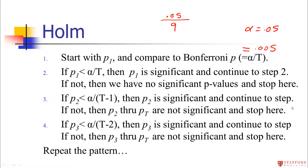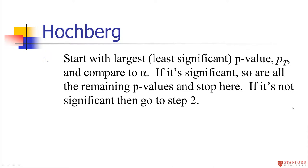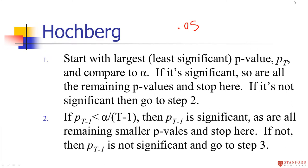Hochberg works in reverse: start with the largest (least significant) p-value and compare it to plain alpha (0.05). If that's significant, everything is significant. If not, move to the next one down and compare it to alpha divided by 2. If that one is significant, all remaining smaller p-values are significant and you stop. Otherwise continue to the next step, comparing to alpha divided by 3, getting more stringent. It will give the same answer as Holm, just starting from the other end.